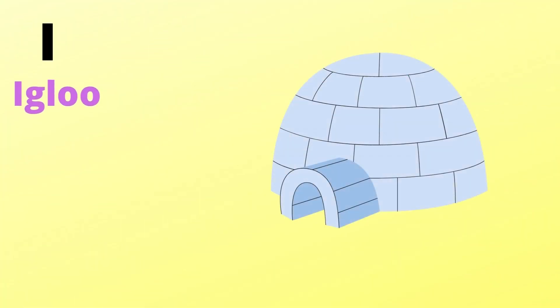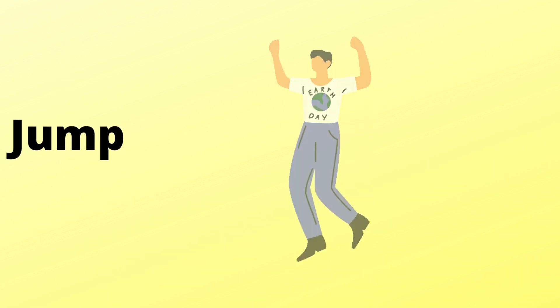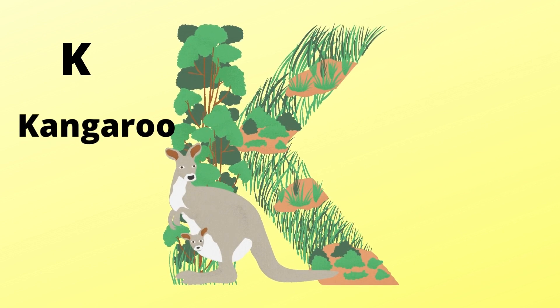I is for igloo, i-i-igloo. J is for jump, j-j-jump. K is for kangaroo, k-k-kangaroo. L is for lion, l-l-lion.